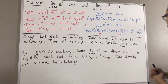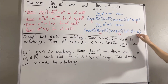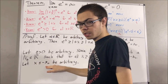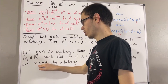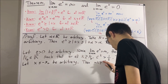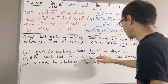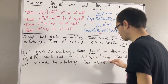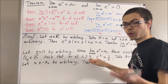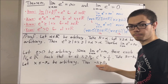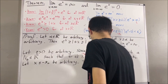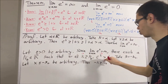From here, we want to show that the inequality is true. Since x is less than or equal to negative capital N0, it follows that negative x is greater than or equal to capital N0. We know the statement is true and it works for every real number greater than or equal to capital N0. So in particular, it must work for negative x. Taking this x to be negative x, we have that e to the negative x is greater than 1 over epsilon.